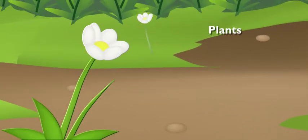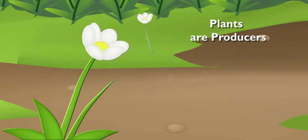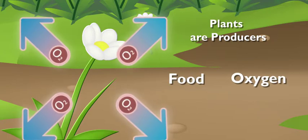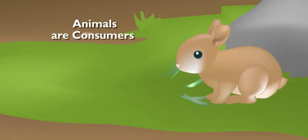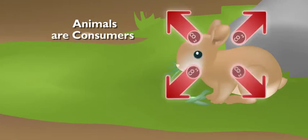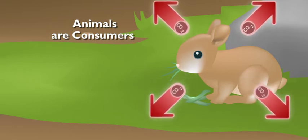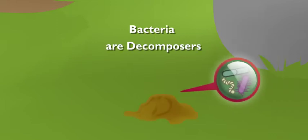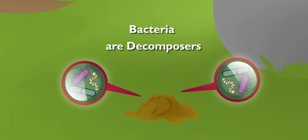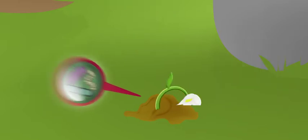What do plants do? Plants are producers. They make food and oxygen for the animals. And animals? Animals are consumers. They eat the plants and other animals and give off carbon dioxide to help keep the plants alive. How is bacteria important? Bacteria are decomposers. They break down the dead animals and plants and turn them into minerals that help things grow.